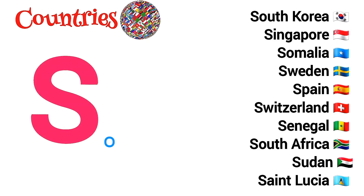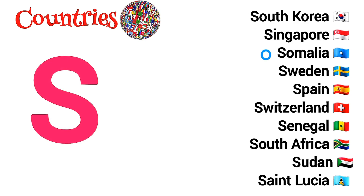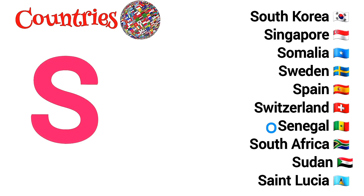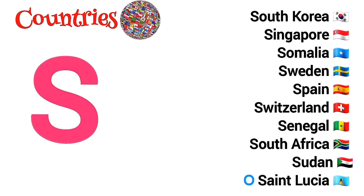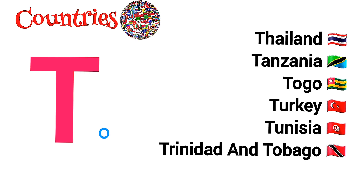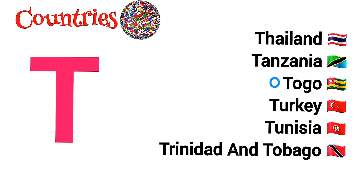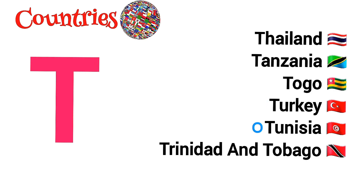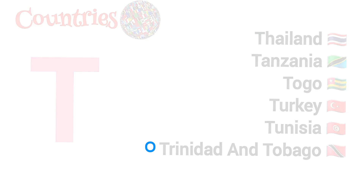S is for South Korea, Singapore, Somalia, Sweden, Spain, Switzerland, Senegal, South Africa, Sudan, St. Lucia. T is for Thailand, Tanzania, Togo, Turkey, Tunisia, Trinidad and Tobago.